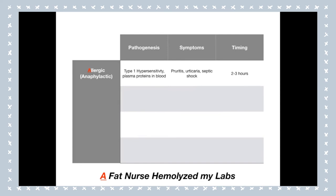To summarize the first type: the allergic transfusion reaction is where the patient has an allergic reaction to the blood. It is due to plasma proteins in the blood. You are especially at risk if you have an IgA deficiency. Symptoms are pruritus, urticaria, respiratory depression and shock if severe, occurring at two to three hours.